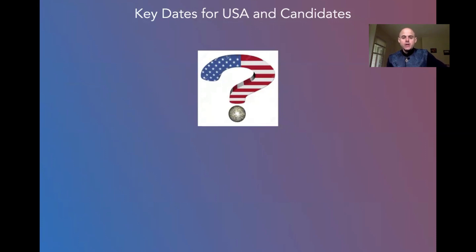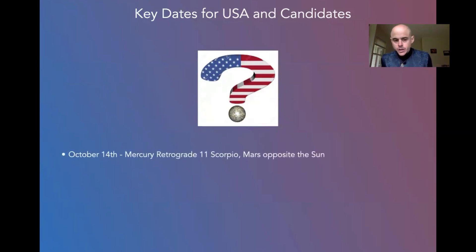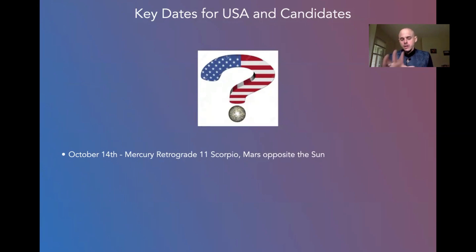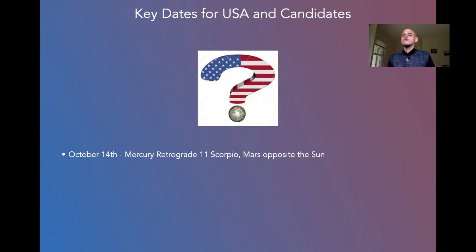You might write these down if you want. Very significant is October 14th — it's a Wednesday, and it's when Mercury goes retrograde at 11 Scorpio. Very significant for the U.S. chart because it squares the nodes — the destiny points, the karmic points of the U.S. chart. Mars will be exactly opposite the sun at that moment, meaning Mars is extremely powerful. That could mean aggression, conflict, intensity, fury, fire, passion.